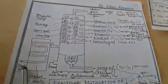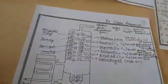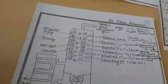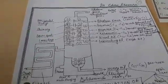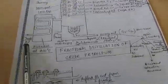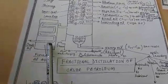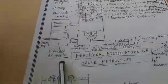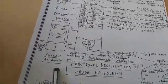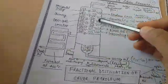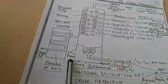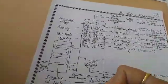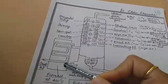The crude oil — from which sulfur and water have been removed — enters from the furnace at a temperature of 400 degrees centigrade into the fractionating tower. The tower also has steam. When the crude oil is heated to 400 degrees centigrade, the different fractions start to vaporize.